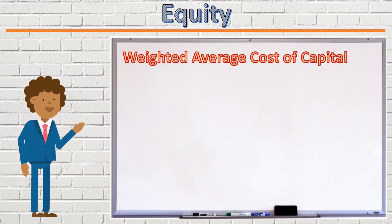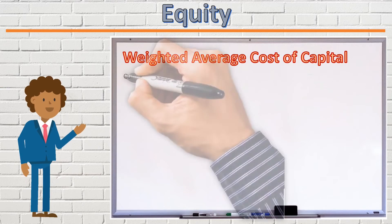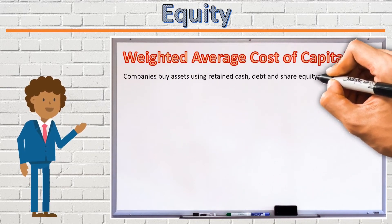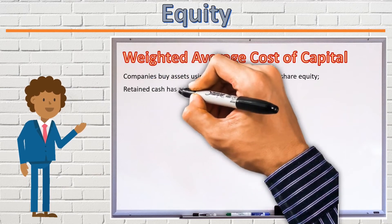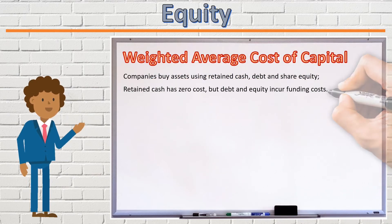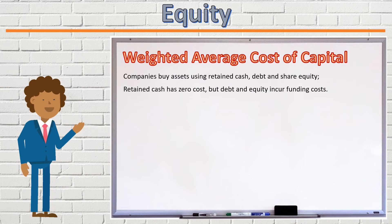The Weighted Average Cost of Capital, or WACC, is a measure of how expensive a company's mix of debt and equity is. When companies buy assets, they usually do so by using a combination of retained cash, debt, and equity. Retained cash carries zero cost to the company, as the company does not need to pay any external party's interest or dividends on that cash. Debt and equity, however, do carry a cost, as the providers of these types of capital require a return on their investment.